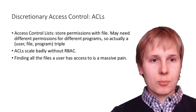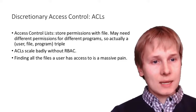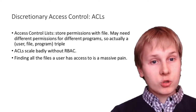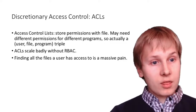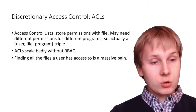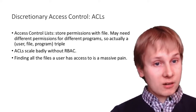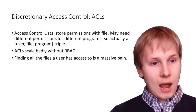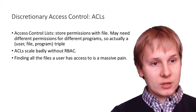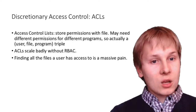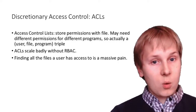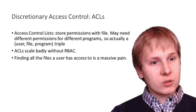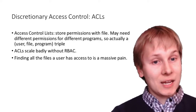Access control lists implement this: you have an access matrix saying who's allowed to access what, stored with the file rather than with the user. Each file has a list of principals allowed to access it. You may need different permissions for different programs — just because your camera app should view the camera doesn't mean a calculator app should. Conceptually, this is really a user-file-program triple, but it's often not implemented that way, which causes confusion and security limitations.